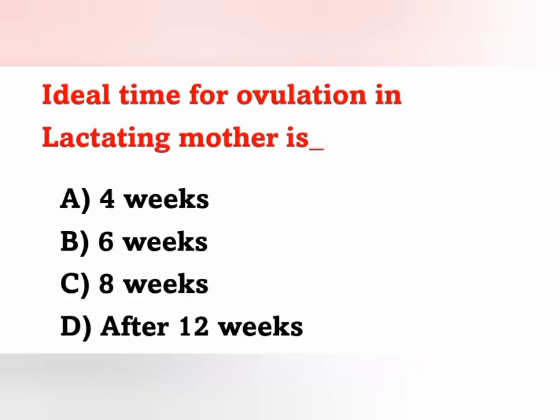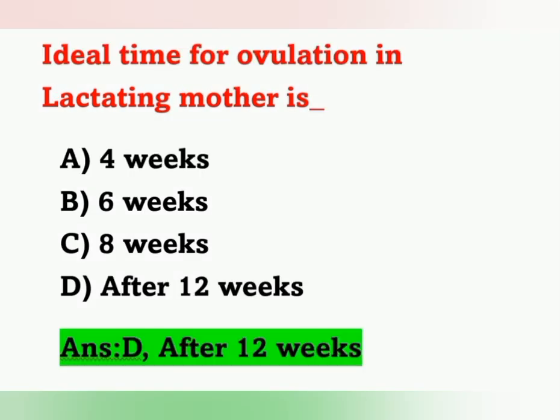The next and last question: Ideal time for ovulation in a lactating mother. Options: A) 4 weeks, B) 6 weeks, C) 8 weeks, D) After 12 weeks. The correct answer is after 12 weeks — Option D. For a non-lactating mother, the ideal time of ovulation is 4 weeks. We discussed questions from previous year question papers; most of these questions are from previous papers and will be helpful for your exam preparation.